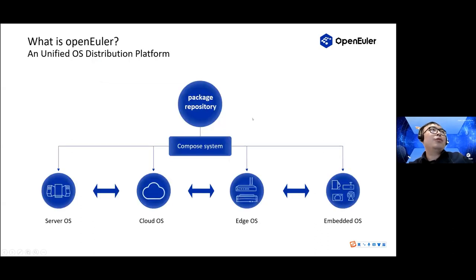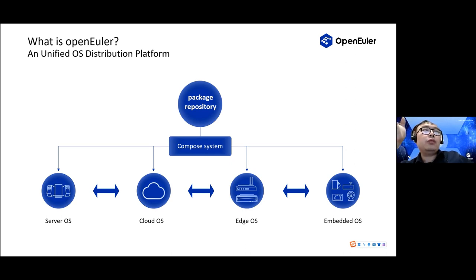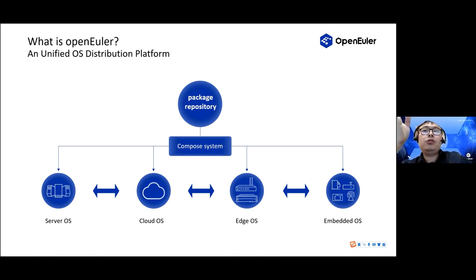So what is OpenEuler? OpenEuler is a mainly Linux kernel-based unified OS distribution platform, initially founded by Huawei in 2019 and later donated to the Open Atom Foundation in September 2021. OpenEuler is similar to other communities like Debian and aims to be a top upstream platform. As we know, there are a lot of sub-platforms or distributions derived from Debian — for example, Ubuntu — and Debian variants are widely used in areas like desktop, embedded, server, edge, and others.